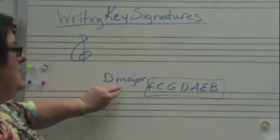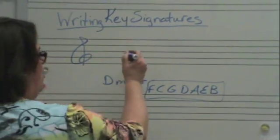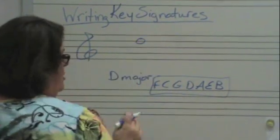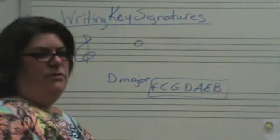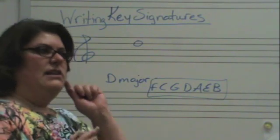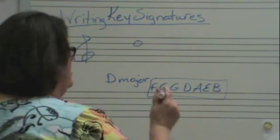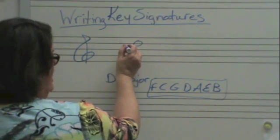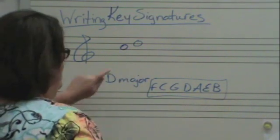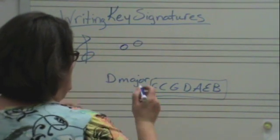Okay, D is do. So I'm going to draw a D, and I know that it's do. I remember from key signatures that the last sharp was ti. So if this is do, this is ti. That note is called C.